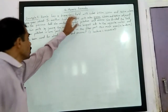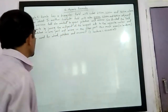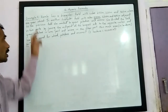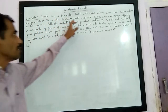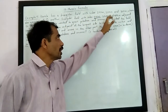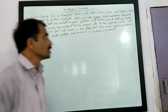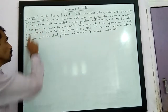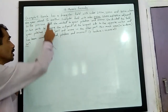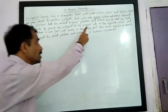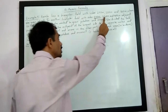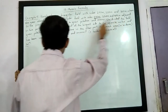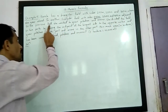Dear students, in Heron's formula, let us try to understand example number 4. Kamla has a triangular field with sides 240m, 200m and 360m where she grew wheat. In another triangular field with sides 240m, 320m and 400m adjacent to the previous field.